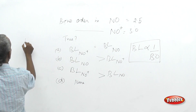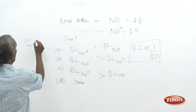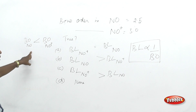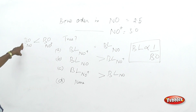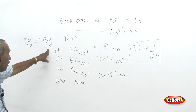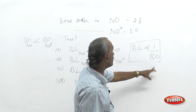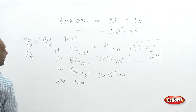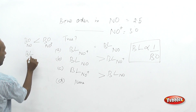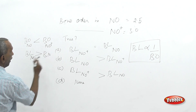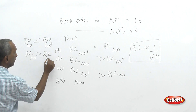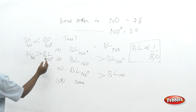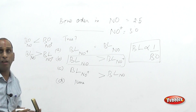Comparing NO and NO⁺: bond order of NO is less than that of NO⁺, that is 2.5 < 3. Since bond length varies inversely with bond order, if bond order is less, bond length would be higher. Therefore bond length of NO is greater than bond length of NO⁺. The correct choice is the second one, which states bond length of NO is greater than bond length of NO⁺.